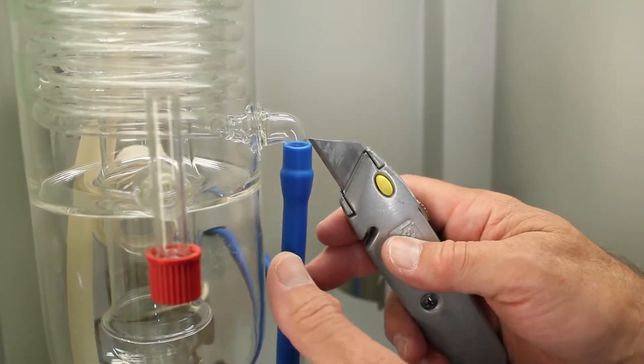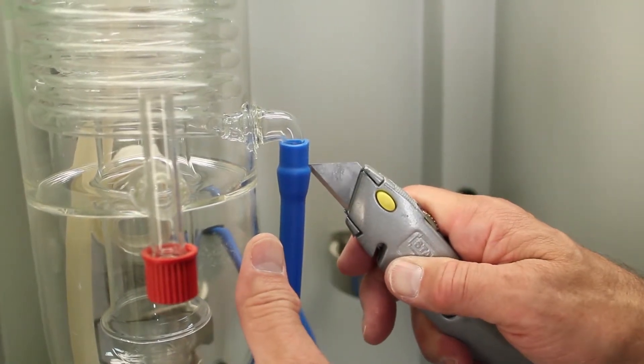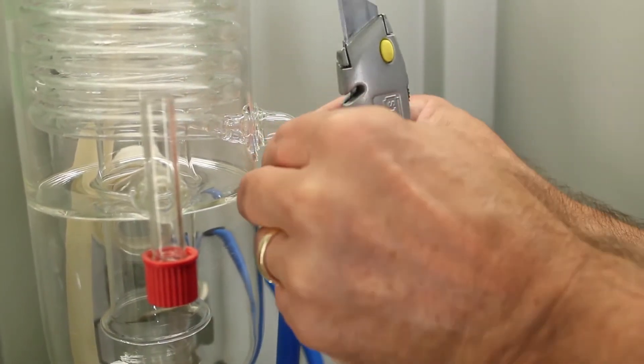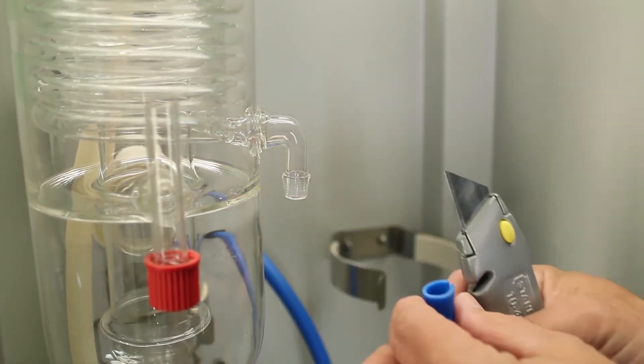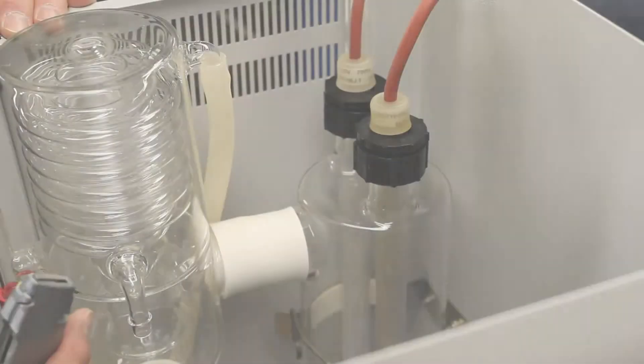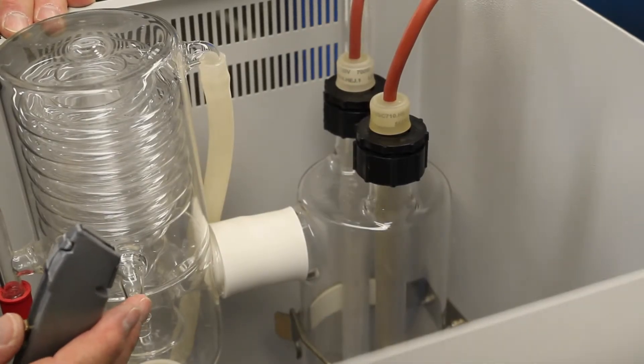Just take a knife, cut it down, peel that around, and it'll pull the tube right off. Now that we have the inlet to the condenser tubing removed, we're going to remove the outlet tubing from the condenser.